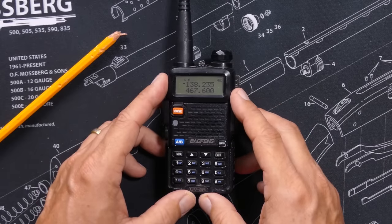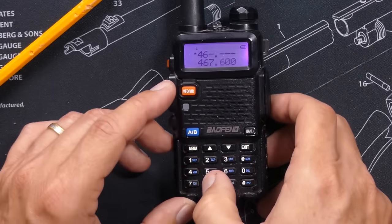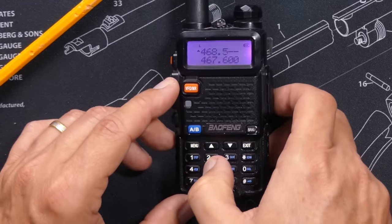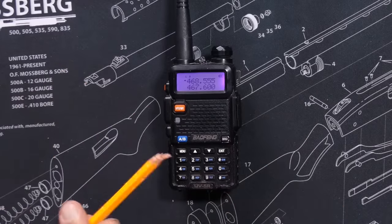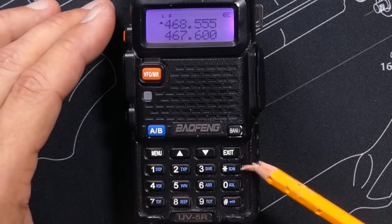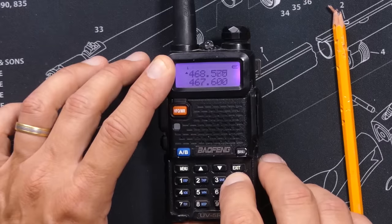Then once in frequency mode, simply enter the frequency that you wish to begin scanning at. Then press and hold the star button, which you will see also says scan, to begin scanning. The sexy voice will tell you that scanning has begun.